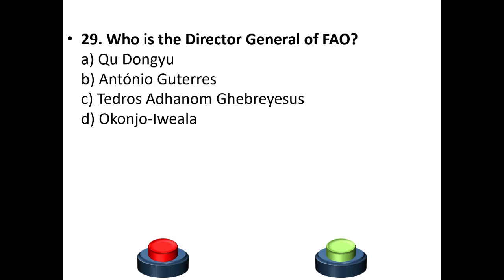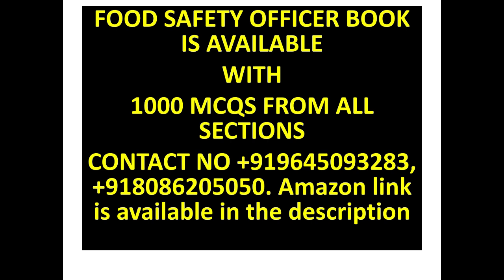Question 29: Who is the current Director General of FAO? Options: a) Qu Dongyu, b) Antonio Guterres, c) Red Rose Athenum, or d) Okanjo Evela. The answer is option A — Qu Dongyu. A food safety officer book with 1,000 MCQs from all sections is available — you can order it through the Amazon link in the description.